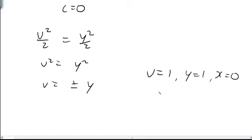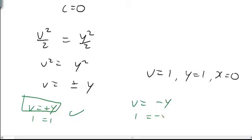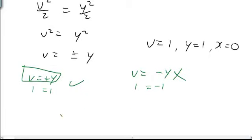Well, if I go with the plus one, v is equal to plus y. Well, when v is equal to 1, y is equal to 1, so this is going to work. The second one here is v is equal to minus y. Well, if I put in 1 for v and 1 for y, so that one does not work. So, our answer is v is equal to y.